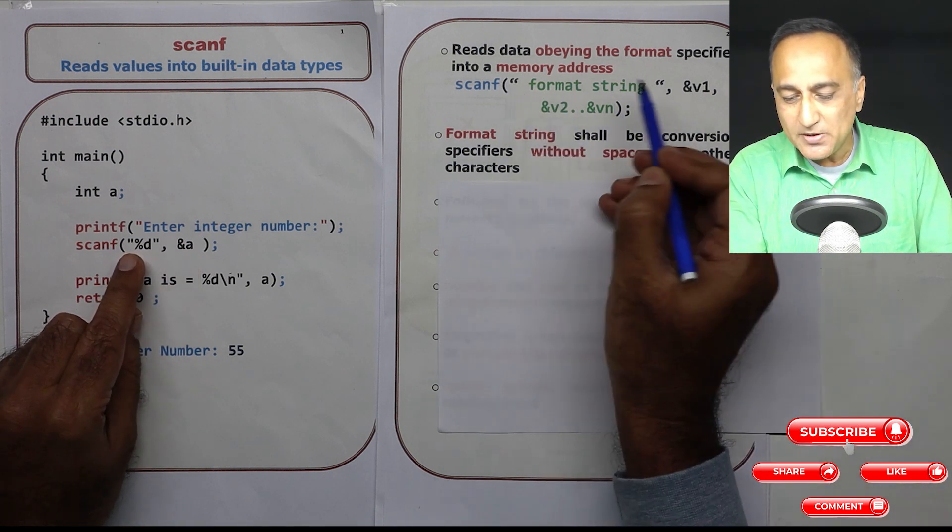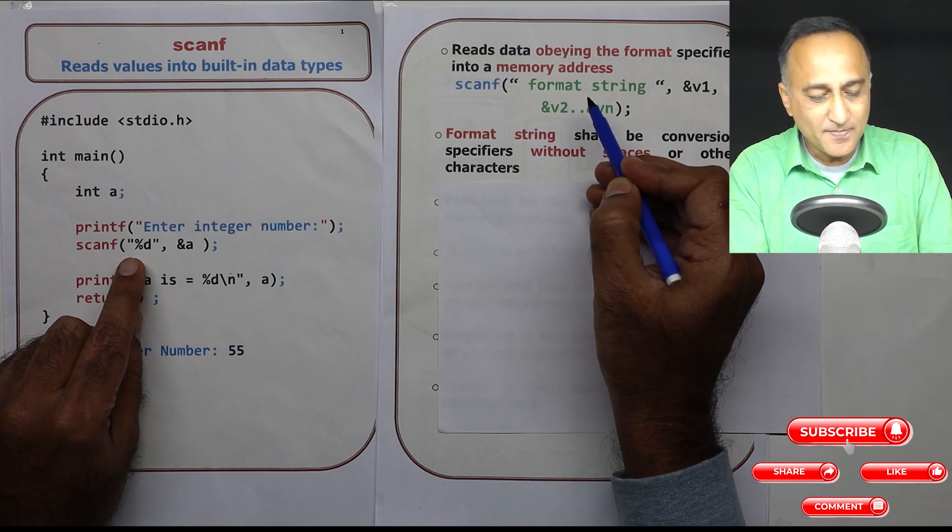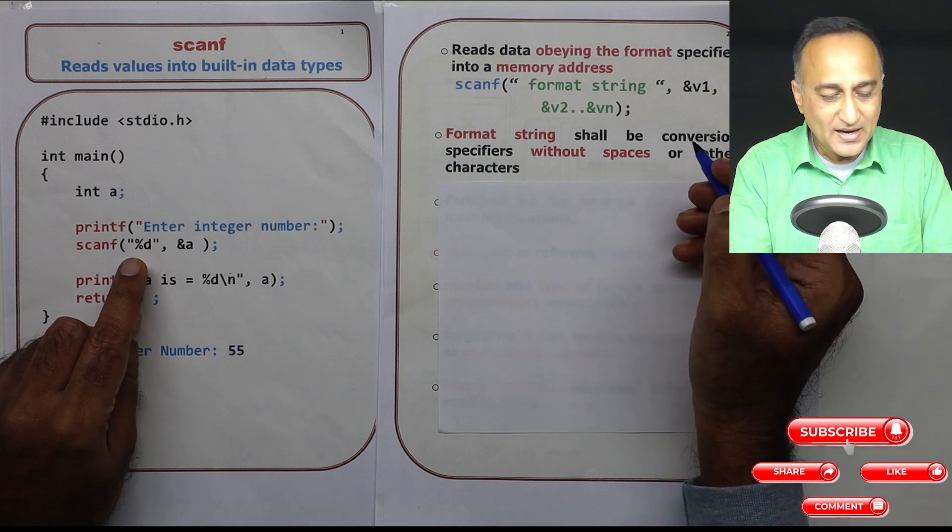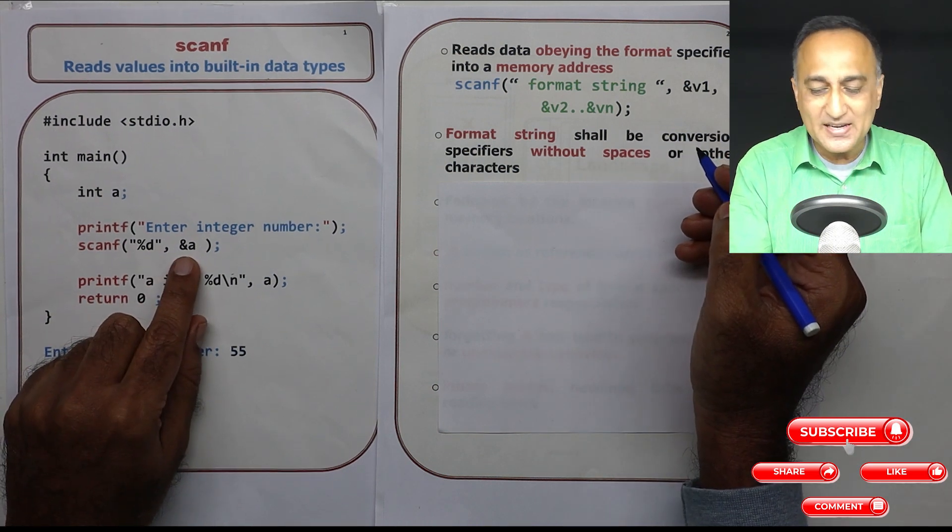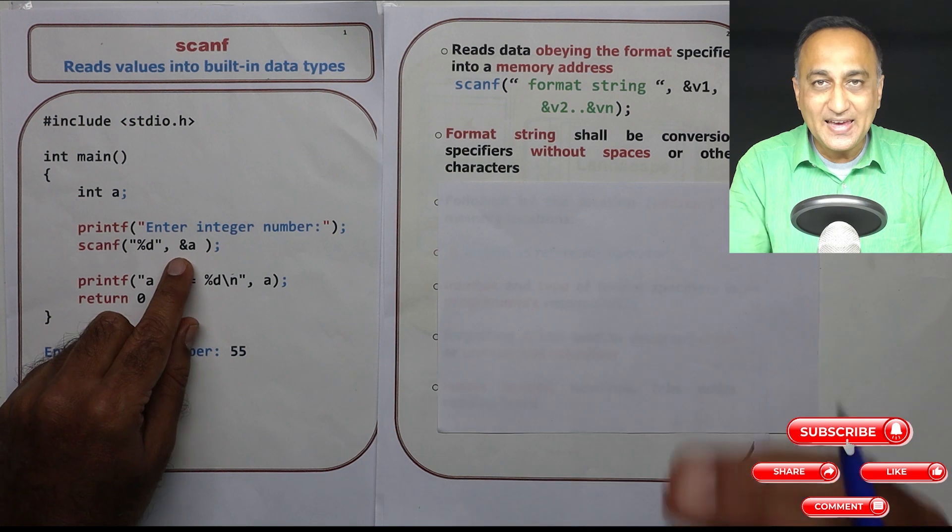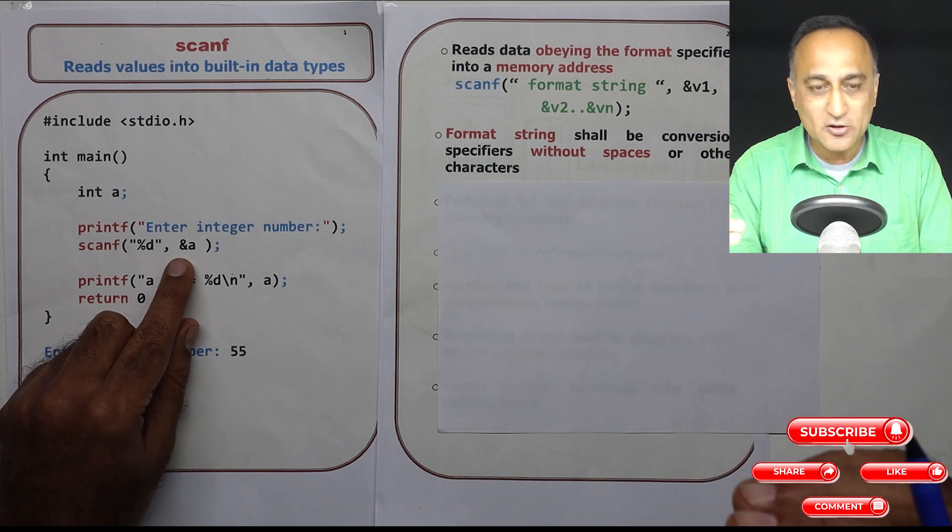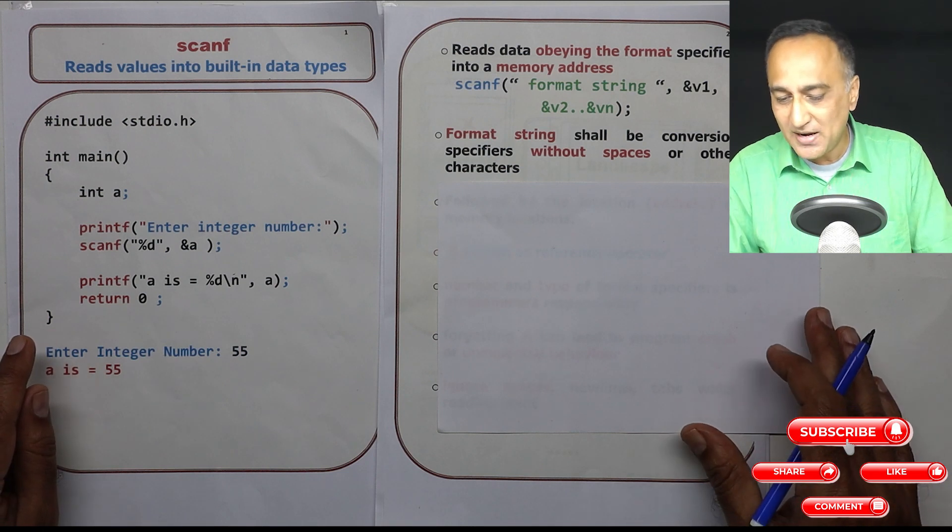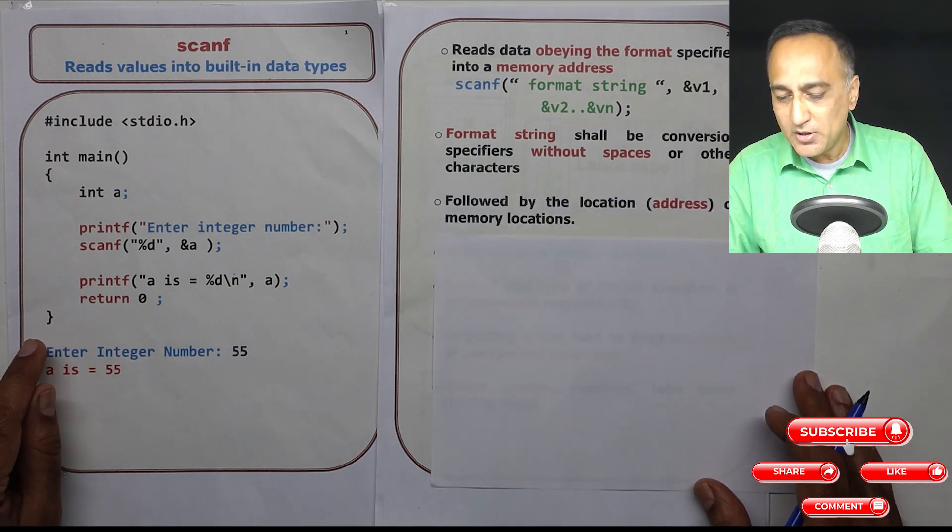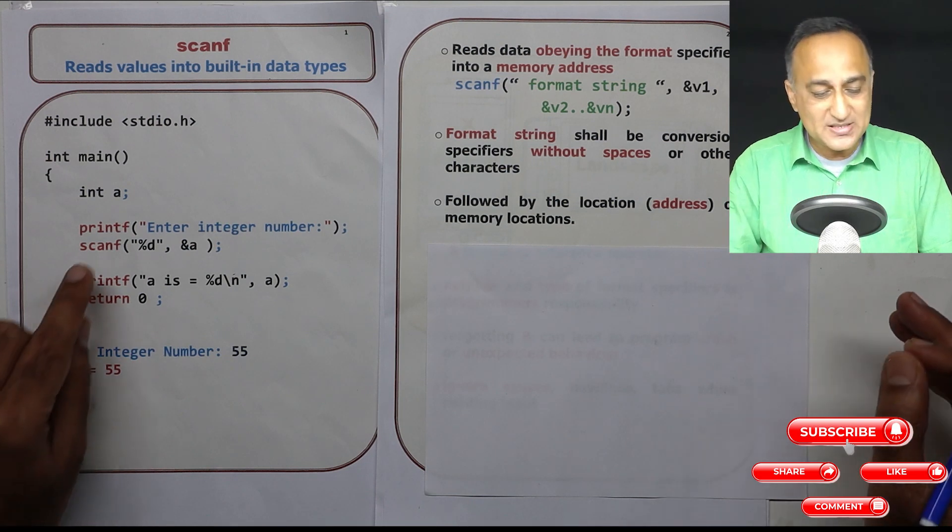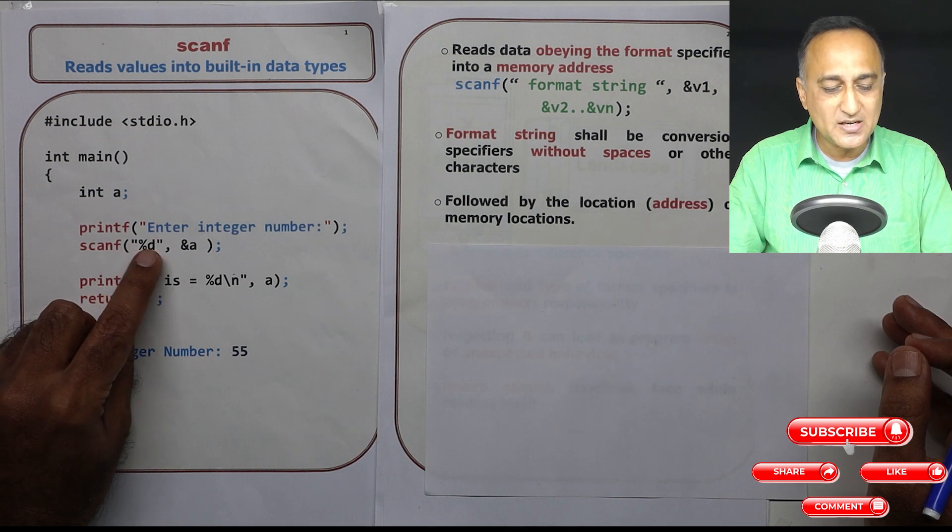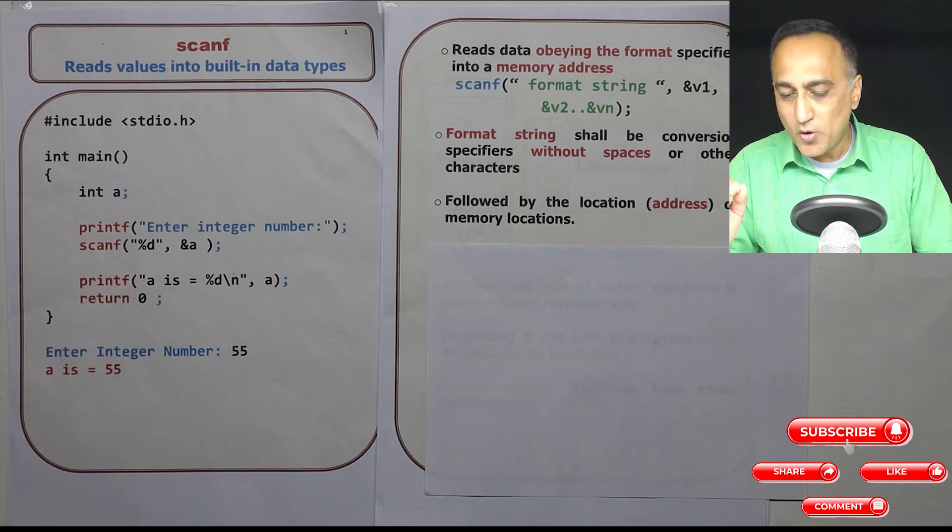So anything between double quotes is the format string. %d in technical terms is known as the conversion specifier, and address of a indicates that wherever a resides, or wherever is the location of a, store whatever value is entered from the keyboard into the value referred by a. Be sure you do not keep any spaces after the double quote and before the percentage - don't keep % space d or d %. So avoid spaces.